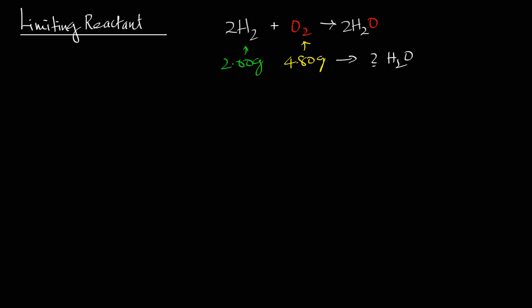Let's look at this from the amounts of hydrogen gas. We are given 2.00 grams of H₂. When we are given some amounts in grams, if we divide that amount by the molar mass we will get the number of moles of that gas. The molar mass of hydrogen gas is taken as 2.02 grams per mole, because each hydrogen has an atomic mass of 1.01, and there are two hydrogen atoms in the molecule.